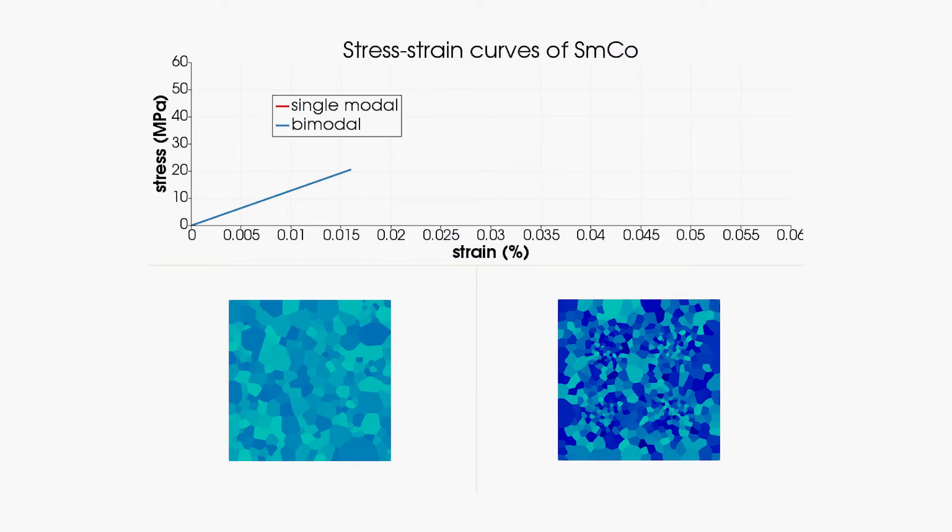Computer simulations show how it works. In the original magnet, cracks work their way between the grains of the material, eventually causing it to fracture.